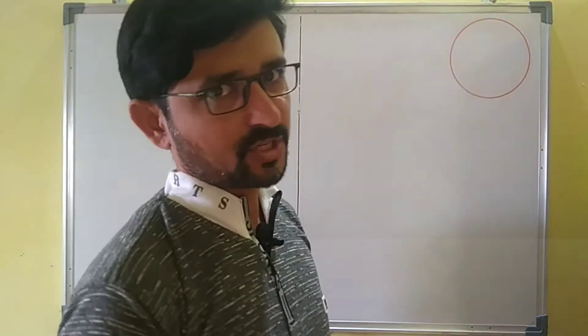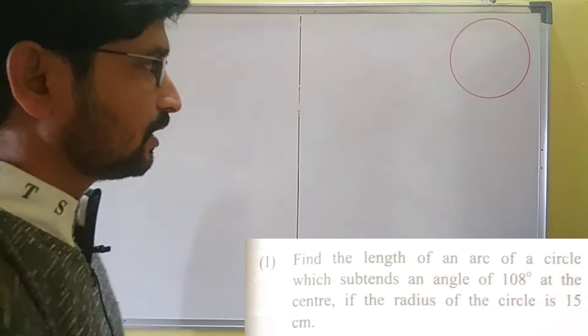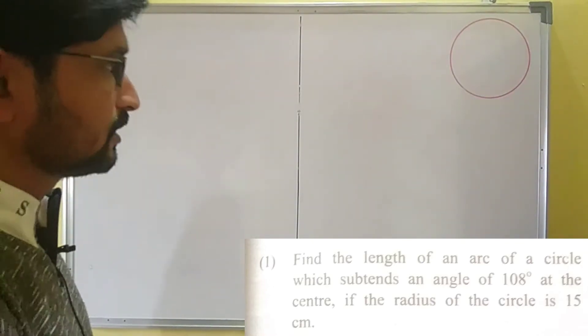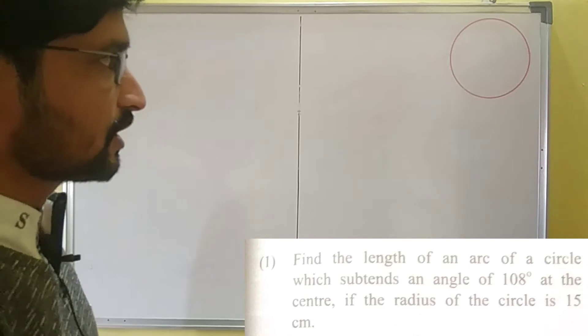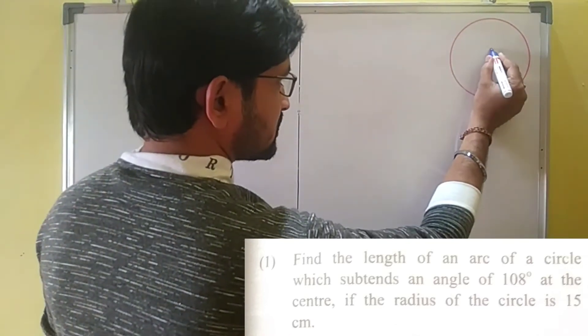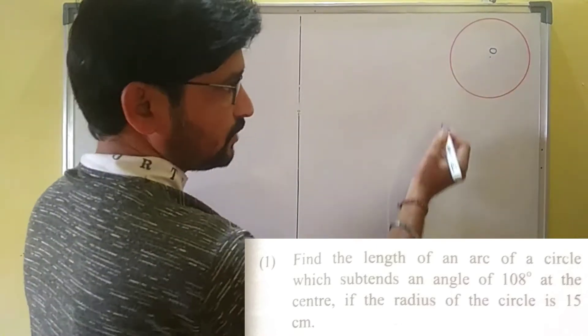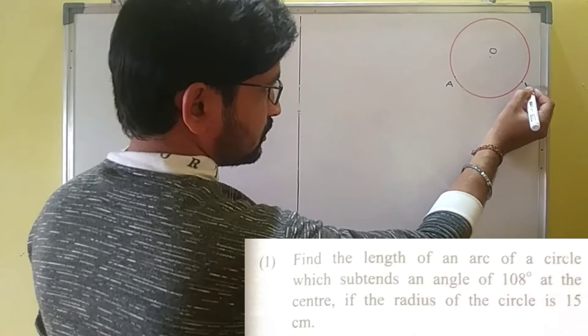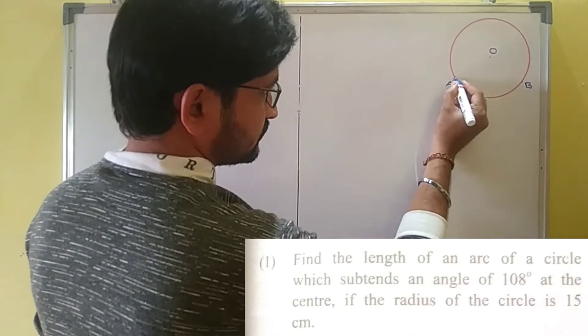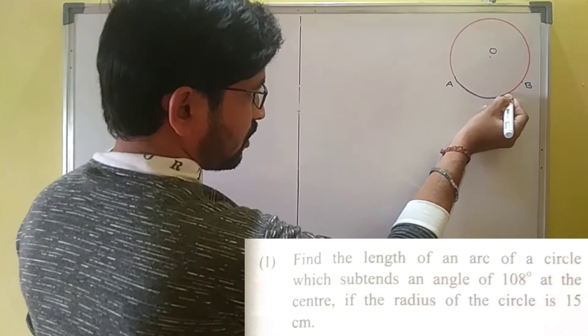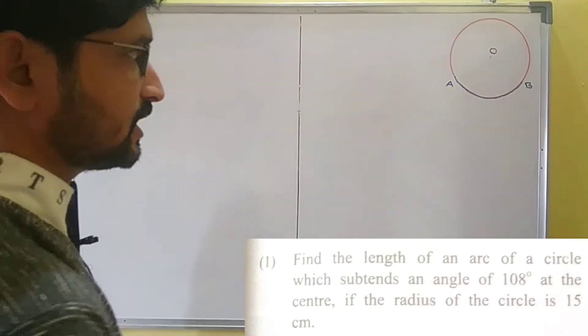In exercise 1.2, question number one asks to find the length of arc of a circle. So what is meant by an arc of a circle? Suppose we draw a circle with center O as the center of the circle, then if we take two points on the circle, that is point A and point B, so this part from A to B is called an arc of a circle. Read the first sentence of the example.